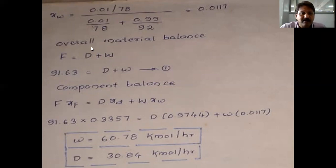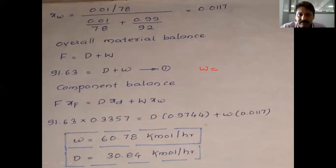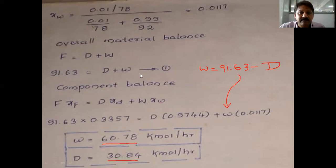Performing the overall material balance: F = D + W, so 91.63 = D + W. The component balance gives xF·F = xD·D + xW·W. Substituting W = 91.63 − D and solving, we get W = 60.73 kmol/hr and D = 30.86 kmol/hr.